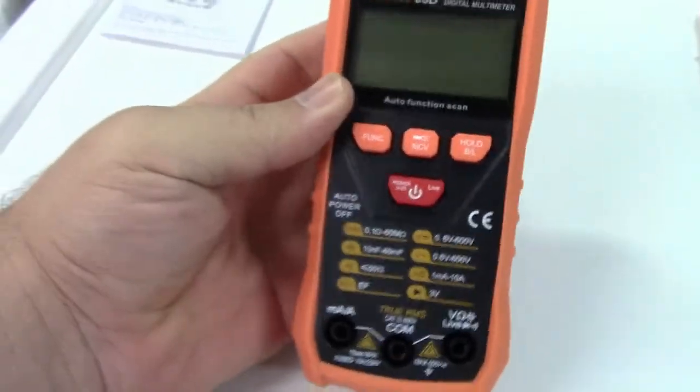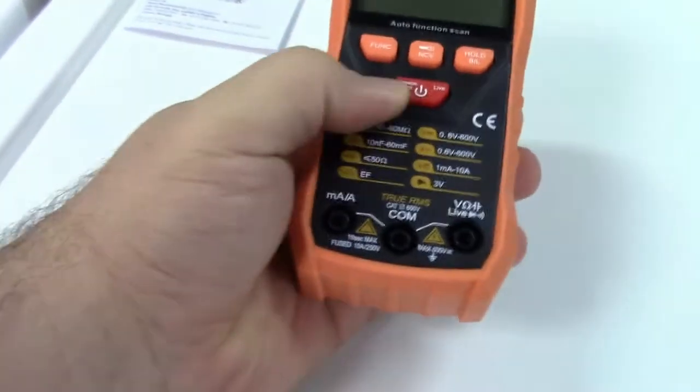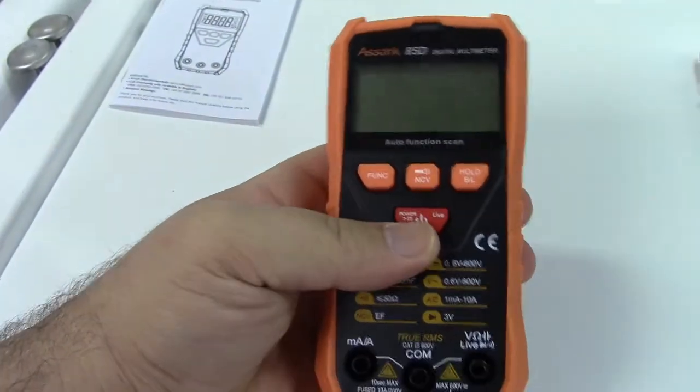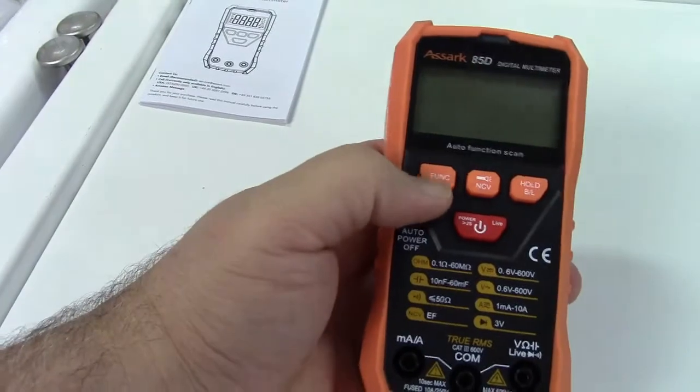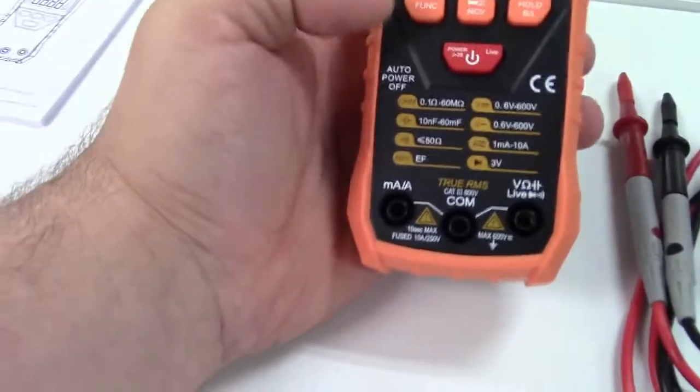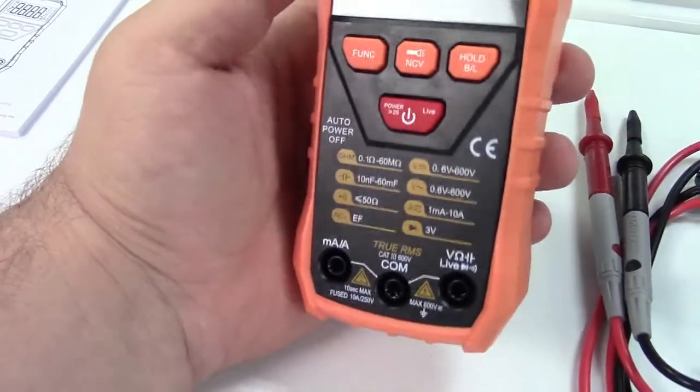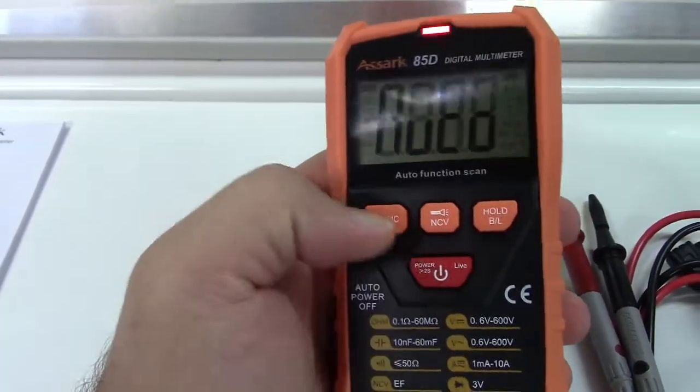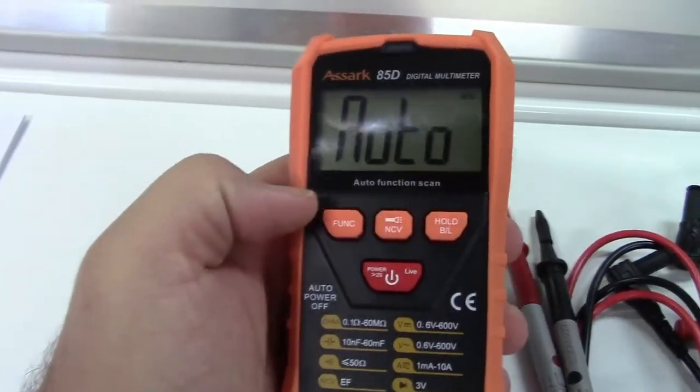So here is the meter here. You can see there's no dial because it's auto ranging and also auto sensing. It's always a good idea to set it to the right function that you need first depending on what you're measuring here. We'll go ahead and turn it on. So it turns on right there.